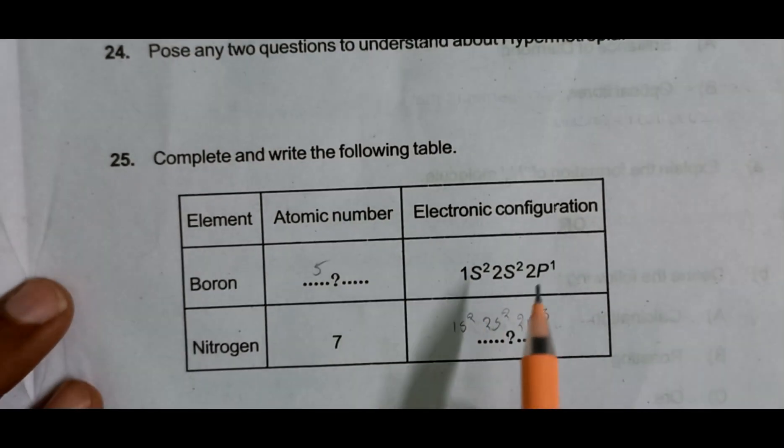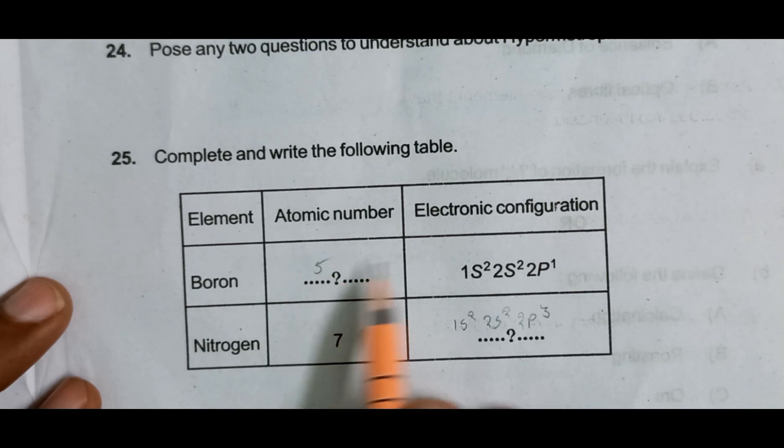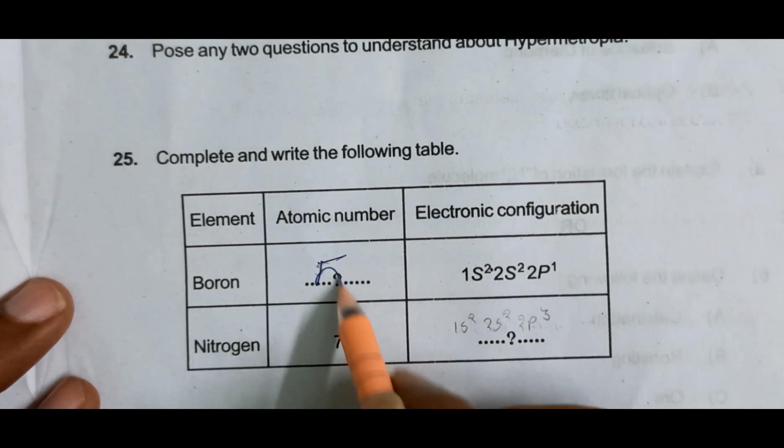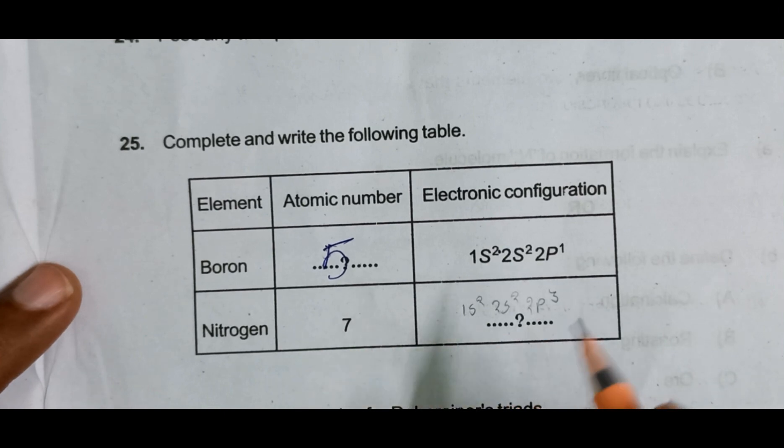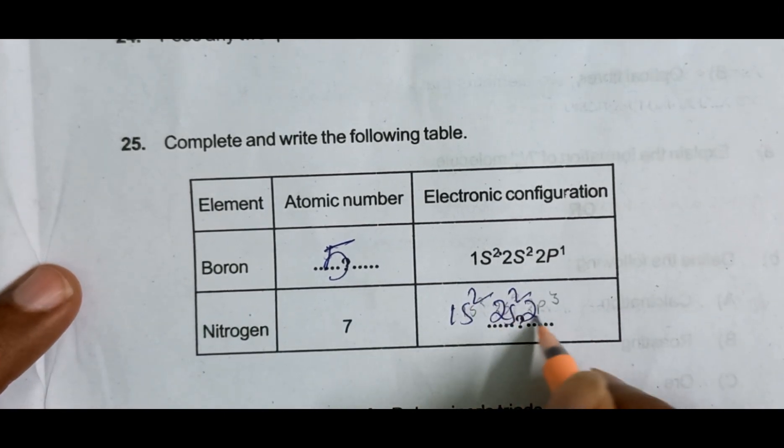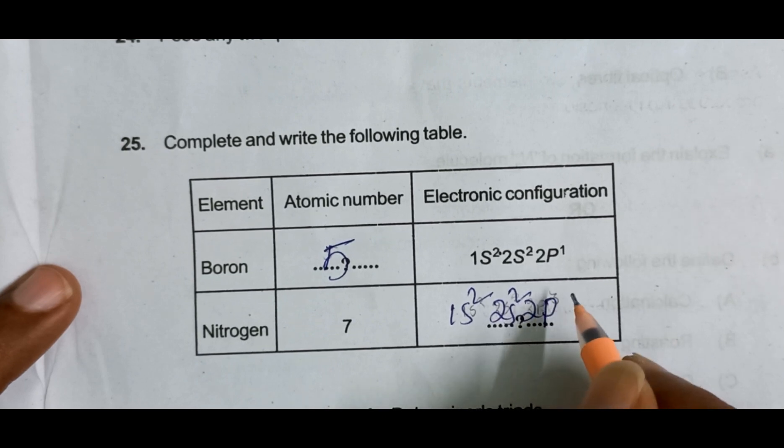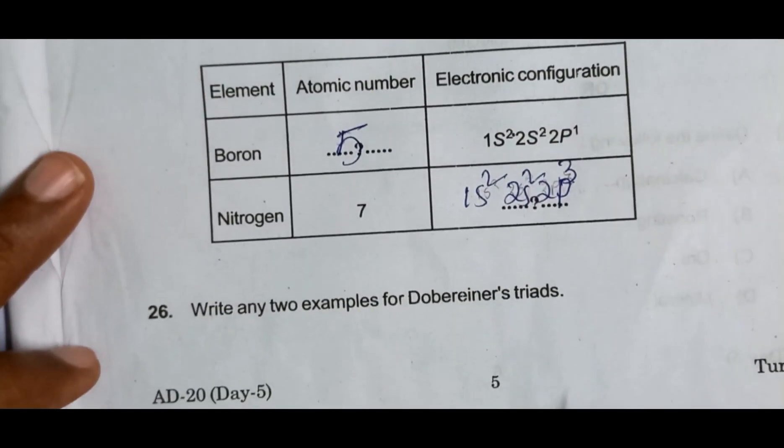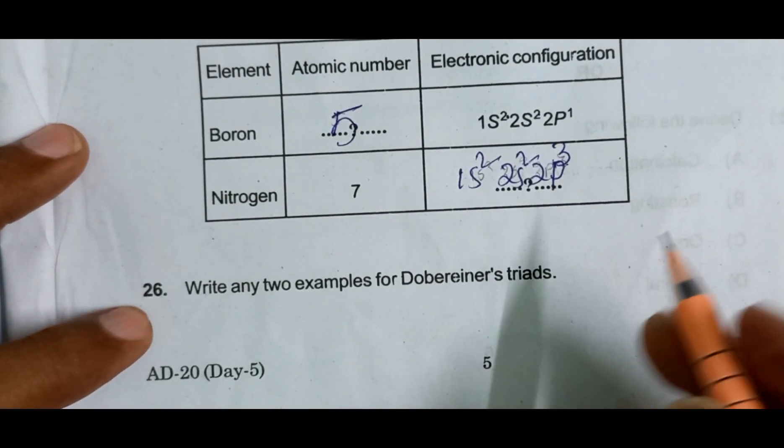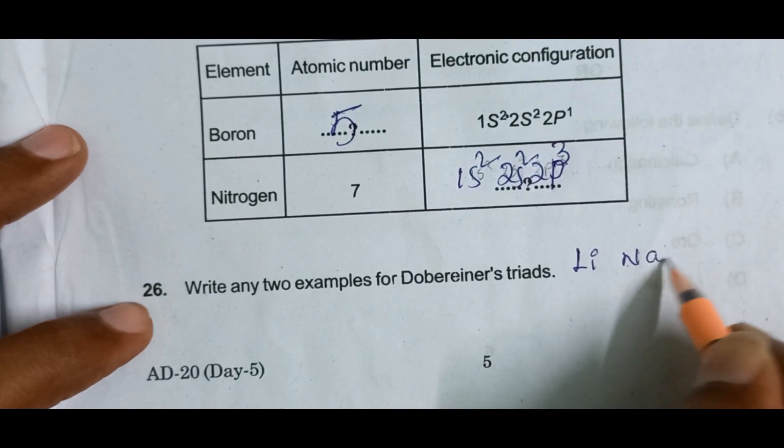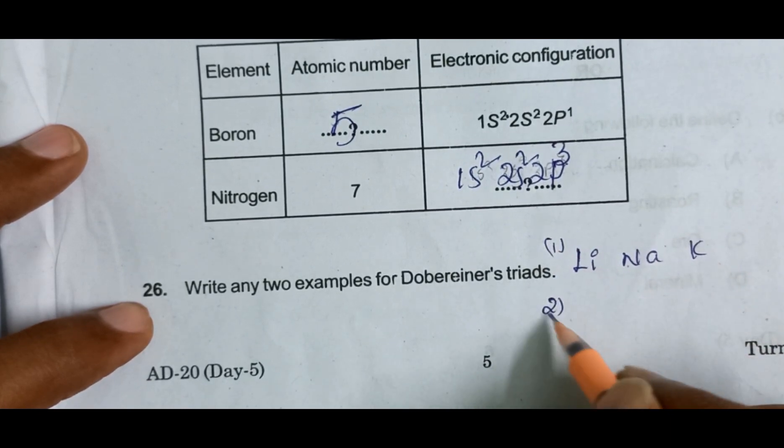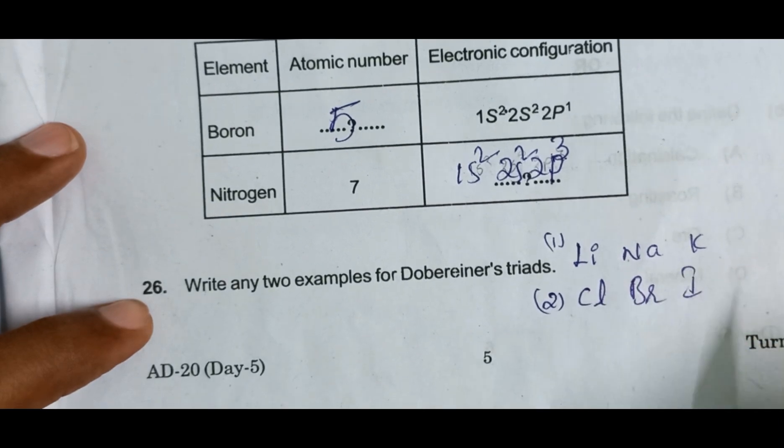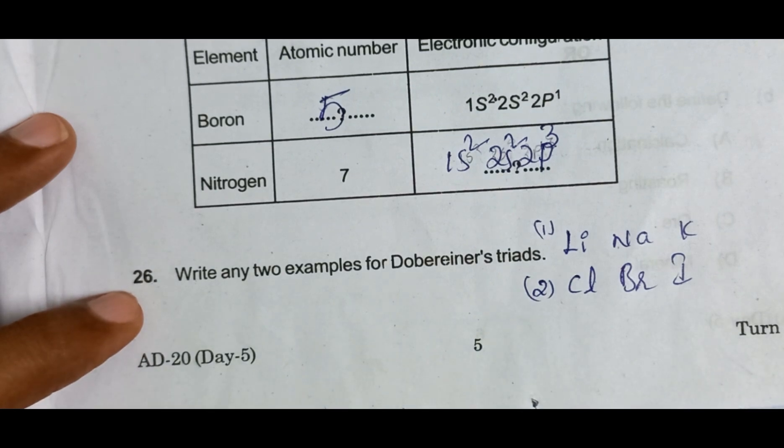Complete the following table. Element name boron is given, atomic number. Electronic configuration: count electrons 2, 4, 1 - 5. So atomic number is 5. Nitrogen is 7, write the electronic configuration: 1s2, 2s2, 2p3 - 2, 4, and 3 equals 7. Next, write any two examples for Dobereiner's triad: first set lithium, sodium, potassium. Second example: chlorine, bromine, iodine.